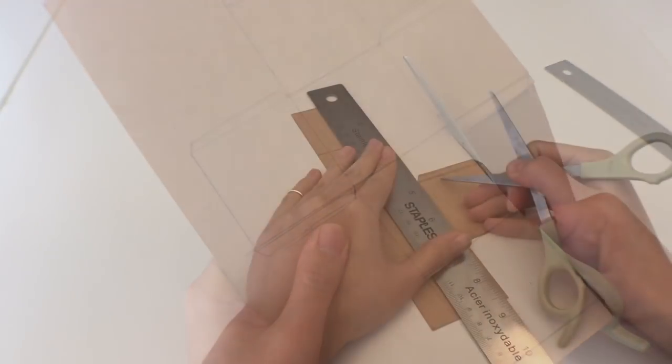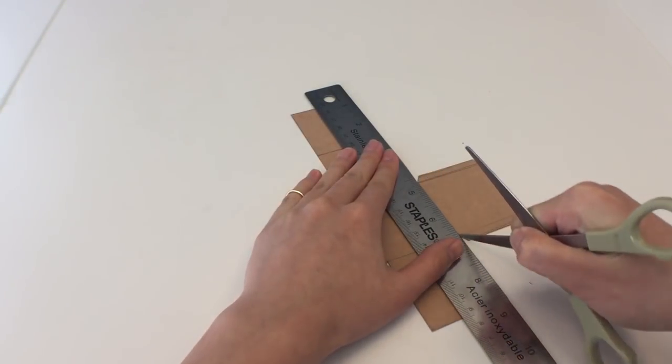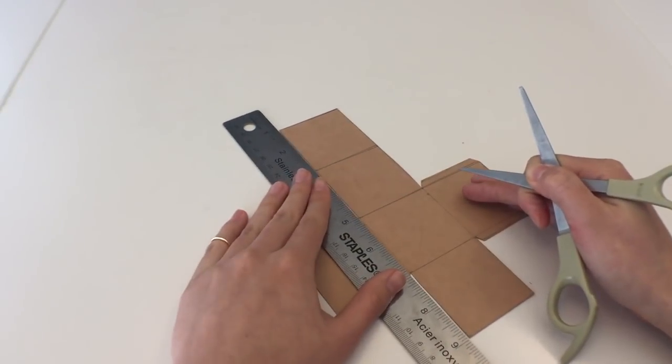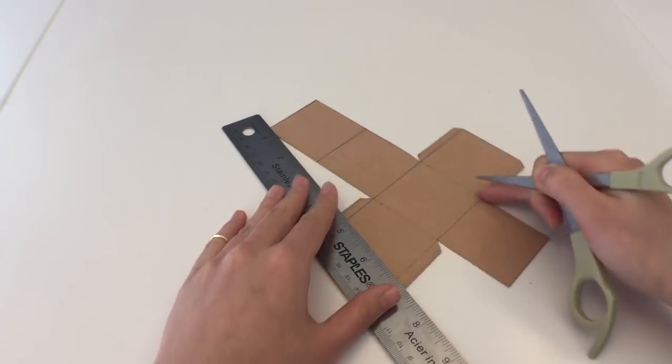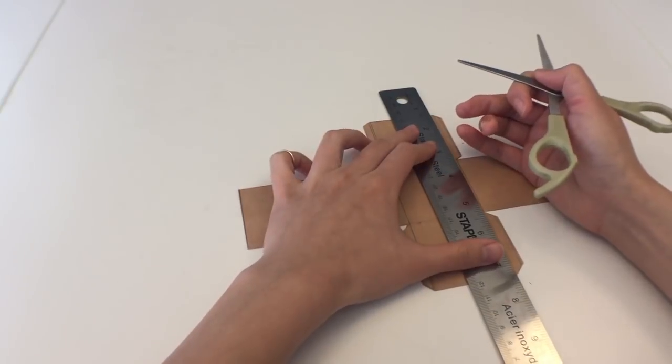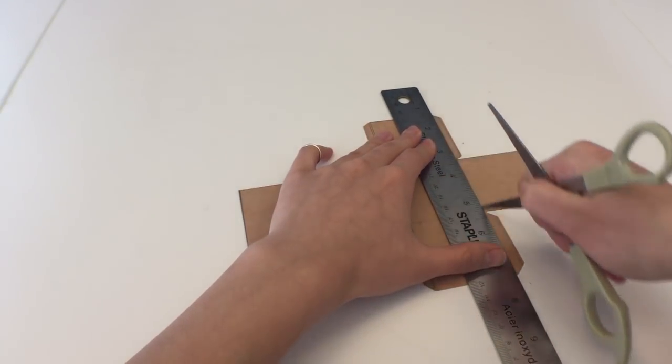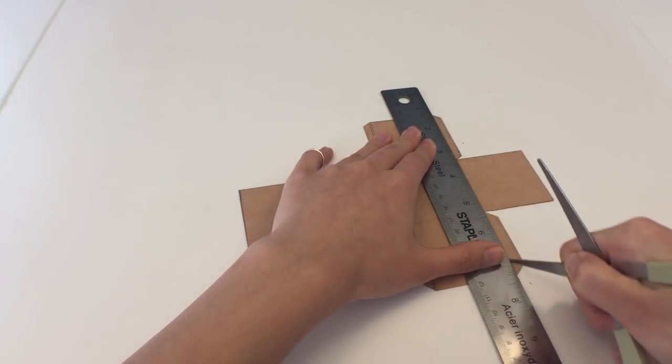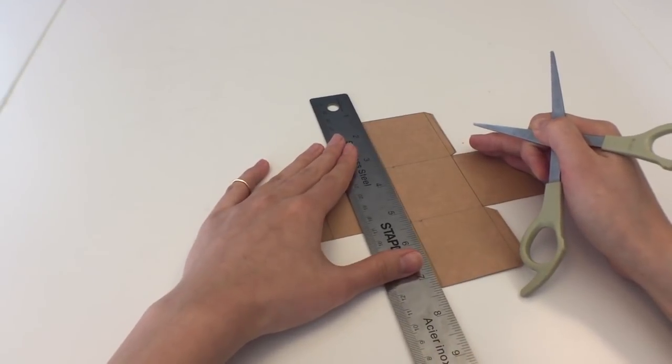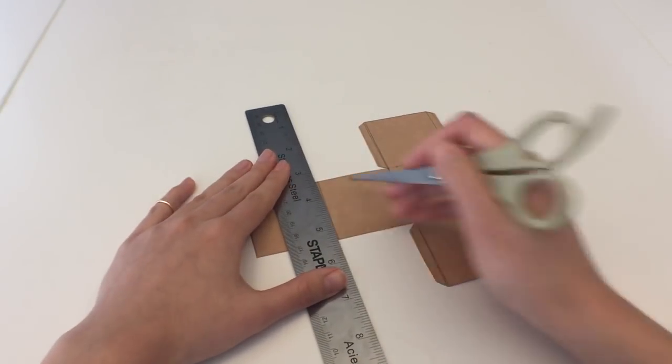And what I'm doing here is just scoring the lines that we have drawn. Scoring, you probably heard me talk about this before, is just using the back of your scissors to run through where the line is. It really helps with the folding process and makes the line super clean. I really advise you guys to use it.